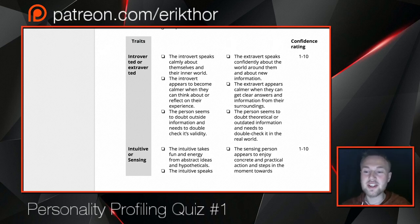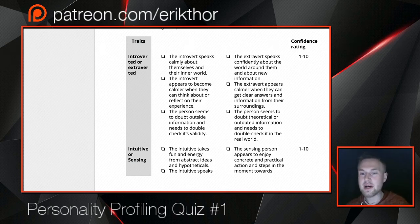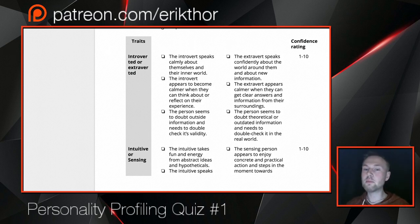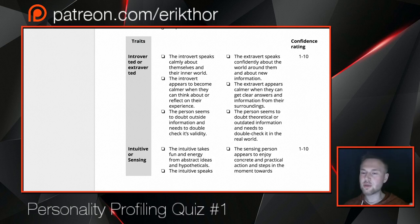Beginning with introversion and extroversion: the introvert speaks more calmly about themselves, their inner world, and their knowledge, while the extrovert speaks more confidently about the world around them and new information. This is what gives the extrovert certainty — things around them — compared to what gives the introvert certainty — things inside them. The introvert becomes more calm when they can think about or reflect on their experience, drawing on past knowledge or values they know to be true through their own logic or philosophical reasoning.